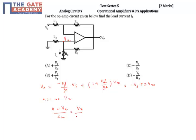Leaving is Vx minus 0 by R1 plus Vx minus V0 by R2, right?